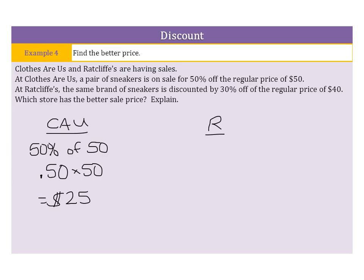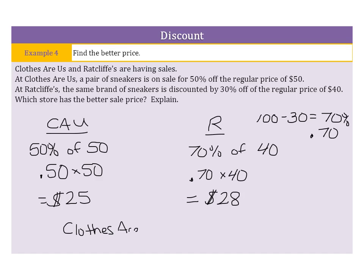With Ratcliffe's, let's use that method too. If it's discounted by 30%, that means I can take 100 minus 30 to get 70%, which is .70 because if I find 70% of $40 by taking .70 times 40, I will get that sale price instead of just the discount. Taking .70 times 40 is going to be $28. So when I compare which is the better sale price, Clothes R Us wins since $25 is less than $28. And that's it. Thank you.